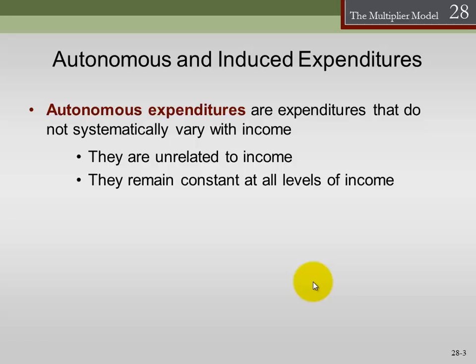One thing to remember is that while we say autonomous expenditure is unrelated to income, it can relate to different levels of income depending on your economy. For example, a person in the underdeveloped world's autonomous expenditure might be lower than that of someone in the United States. So autonomous expenditure in the U.S. might be much higher than, say, the autonomous expenditure in Nigeria.